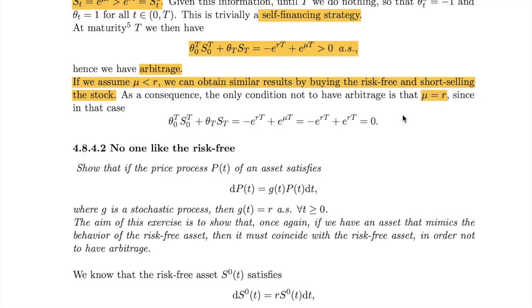Conversely, if mu is smaller than R, we can obtain the same result by short-selling the stock and buying the risk-free. The only condition to avoid arbitrage is that mu and R are exactly the same. In another exercise I leave to you, we can show that if there exists an asset, possibly a risky asset, that mimics the risk-free, then it must be the risk-free and cannot be something else.